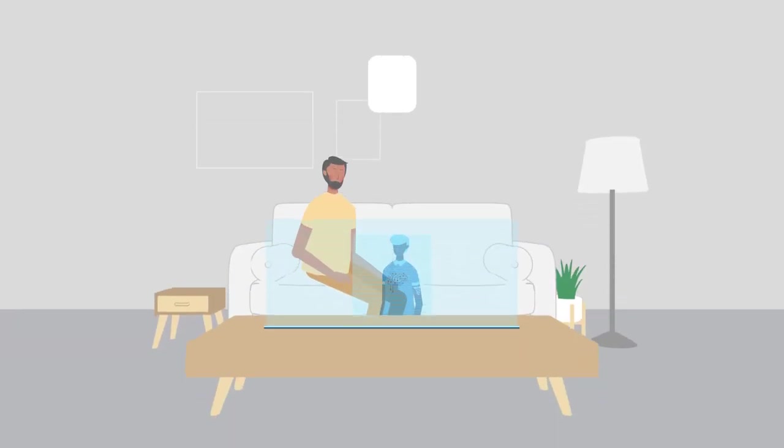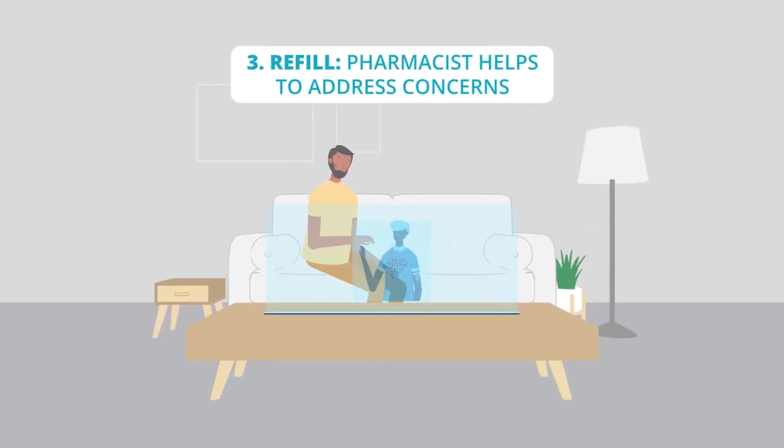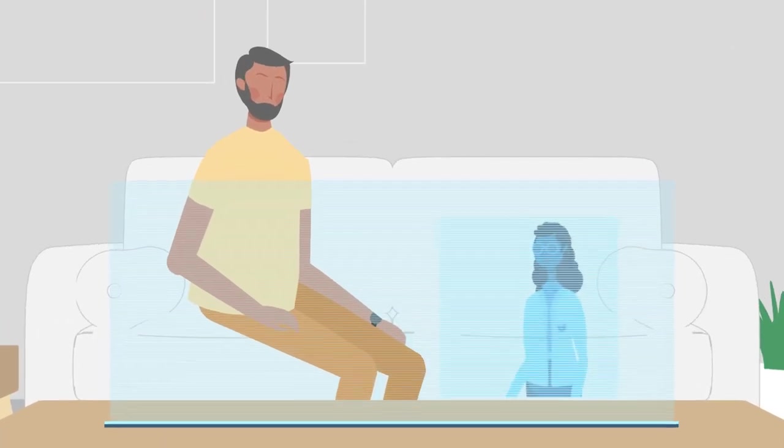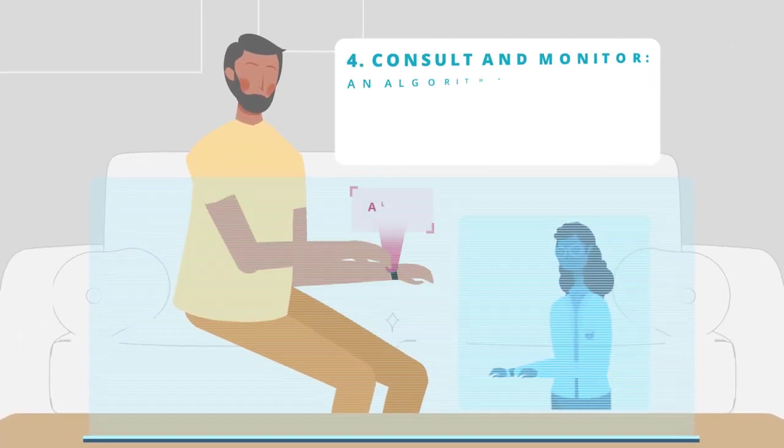Don asks his digital care plan avatar some questions about his blood sugar. This triggers an escalation from the AI to a live chat with his pharmacist.